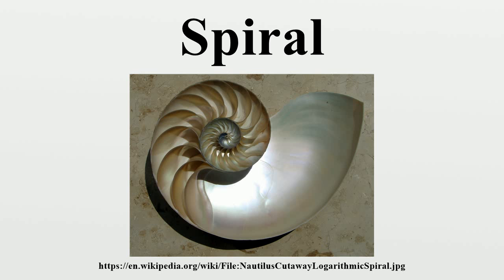Definition b includes two kinds of three-dimensional relatives of spirals. A conical or volute spring, and the vortex that is created when water is draining in a sink, is often described as a spiral or as a conic helix. Quite explicitly, b also includes a cylindrical coil spring and a strand of DNA, both of which are quite helical.